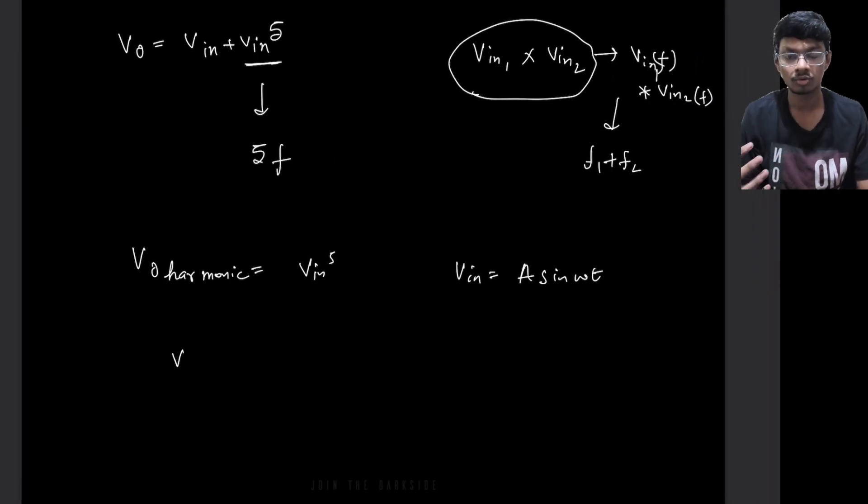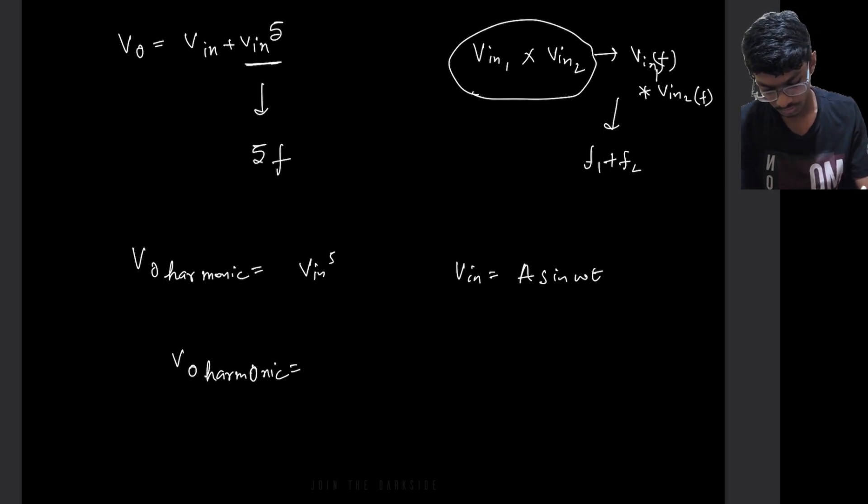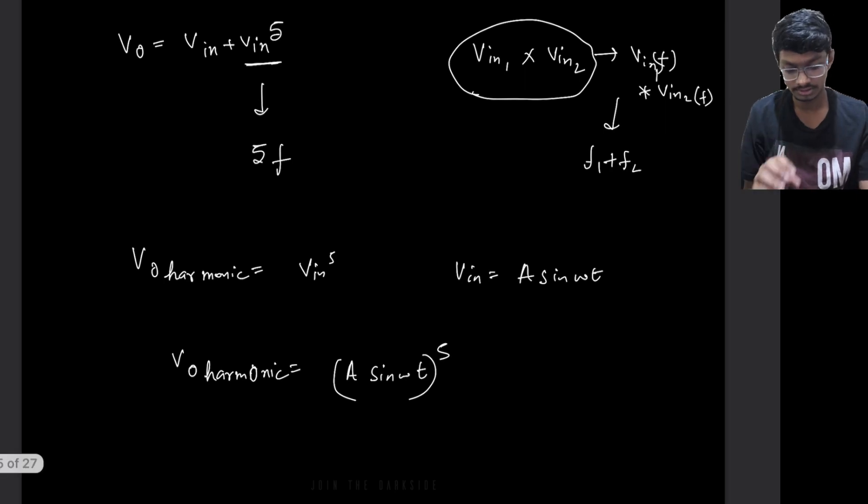Now, what will be the output of the harmonic? The V output of the harmonic will be equal to A sine omega t to the power 5. Now, like this is the amplitude. So the amplitude will be A to the power 5 sine to the power 5 omega t.